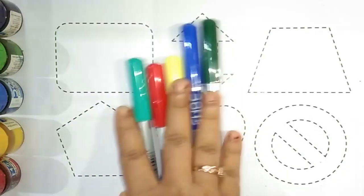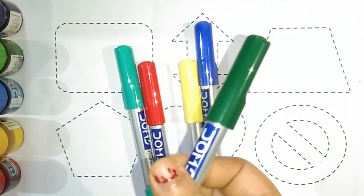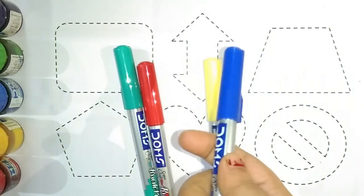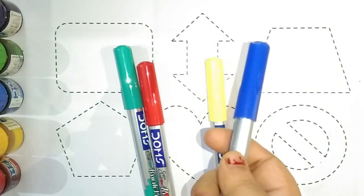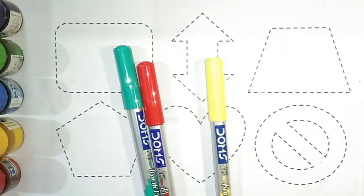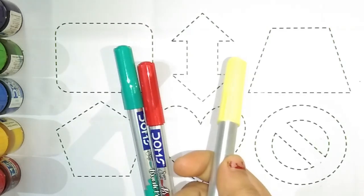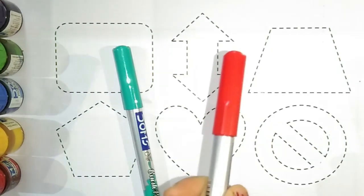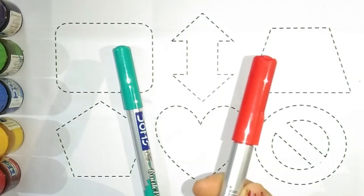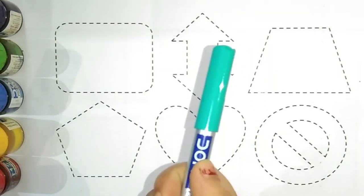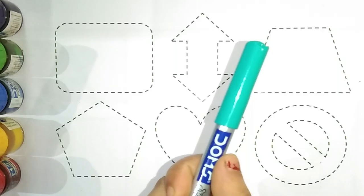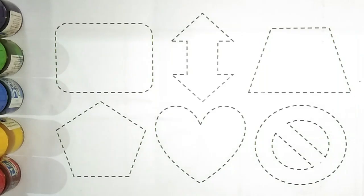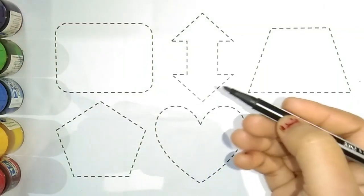This is green color. Which color is this? This is green color. This is blue color. Which color is this? This is blue color. This is parrot color. Which color is this? This is parrot color. This is red color. Which color is this? This is red color. This is sea green color. Let's draw some shapes with colors.